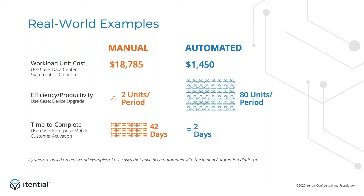The third use case is focused on time to complete. The team automated a process for provisioning of enterprise mobility customers. In the pre-automated environment, the end-to-end process took 42 days on average, while the automated version took only two days. A big part of the automation team's ability to reduce that interval was getting buy-in from all stakeholders and agreements that the system would automate 100% of the process. One of the business benefits was that the organization could start billing for service one day after the order was placed, instead of having to wait a month and a half. In this case, the benefit wasn't only on cost reduction, but on revenue acceleration.